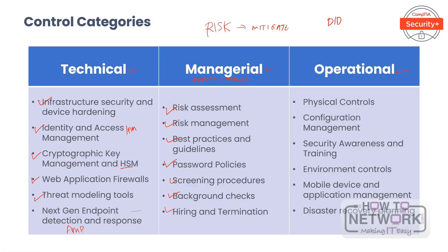The third type is operational. Operational controls include organizational culture and physical controls that form the outer line of defense against direct access to data — such as protecting backup media, securing output and mobile file storage devices, and paying attention to facility design and details including layout, guards, locks, and surveillance systems. All of this refers to physical controls.